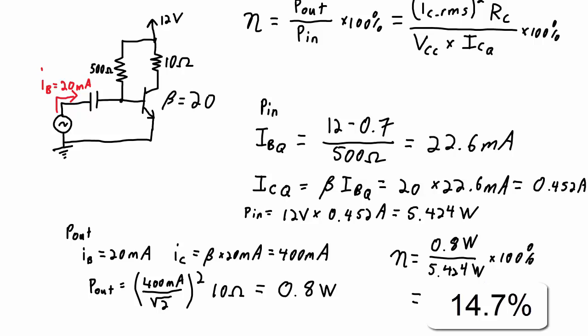And less than the 25 percent maximum power efficiency you can get with these class A BJT amplifiers. I hope that example helped your learning about class A amplifiers. And thank you for watching.